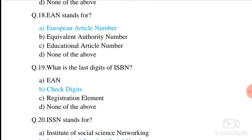Question number 19. What is the last digit of the ISBN number called? The last digit is called the check digit. And the first digits are called the prefix element.